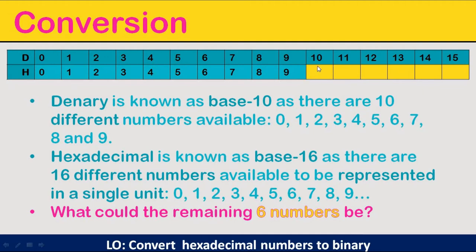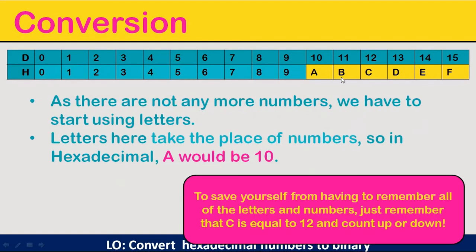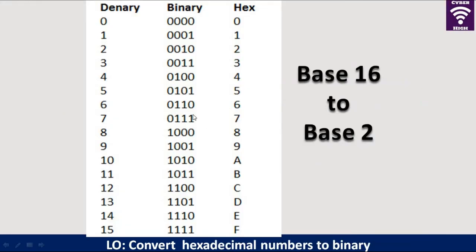So when we have 0 up to 15, now in hex, what happens is from 10, we have to use A, B, C, D, E, and F to represent our 10, 11, 12, 13, up to 15. That's how hexadecimals work.